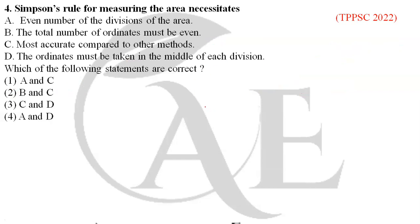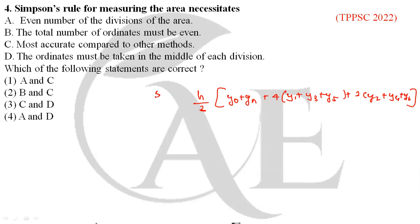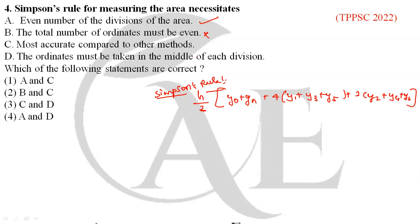Next question: Simpson's rule for measuring area. The formula is: Area = (h/3) × [first ordinate + last ordinate + 4 × (sum of odd terms) + 2 × (sum of even terms)]. Regarding the statements: the area must have an even number of divisions — correct. The total number of ordinates must be even — wrong, ordinates can be odd or even. Simpson's rule is the most accurate compared to other methods — absolutely correct. The ordinates must be taken in the middle of each division — wrong, they can be taken at the first or last position. So options A and C are correct, making option 1 the correct answer.